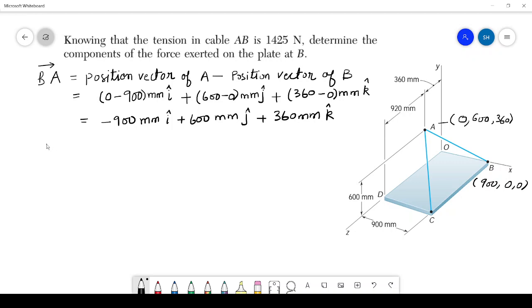Now you can calculate the magnitude of BA by simply taking the square root: minus 900 squared plus 600 squared plus 360 squared, and this will come out to be 1140 mm.